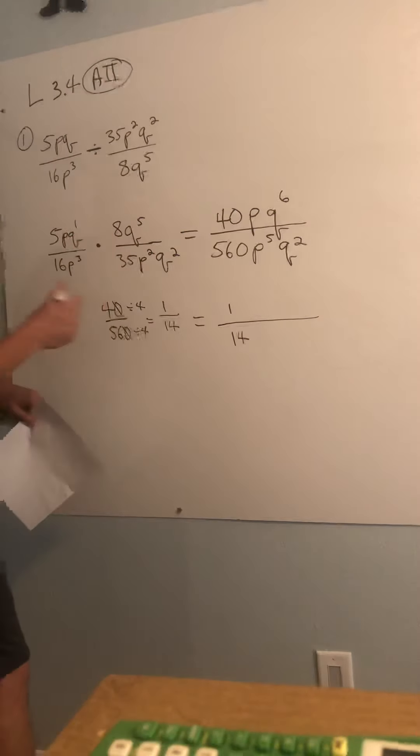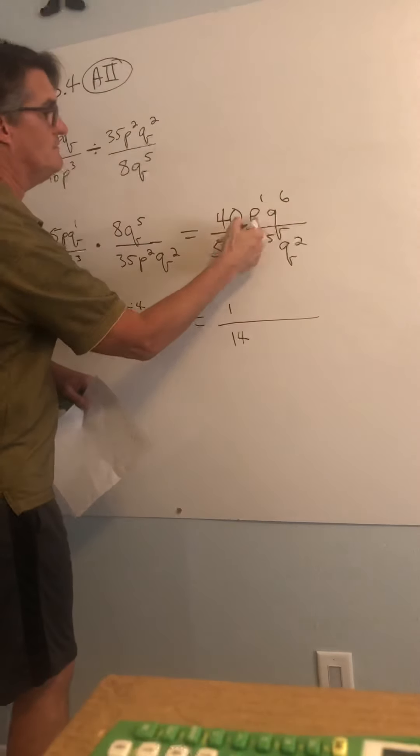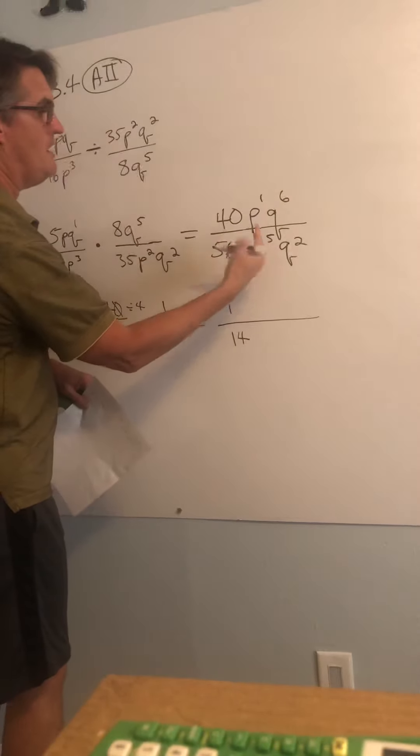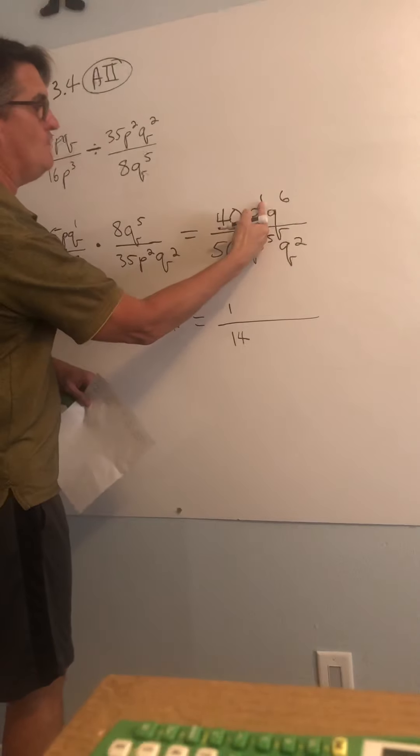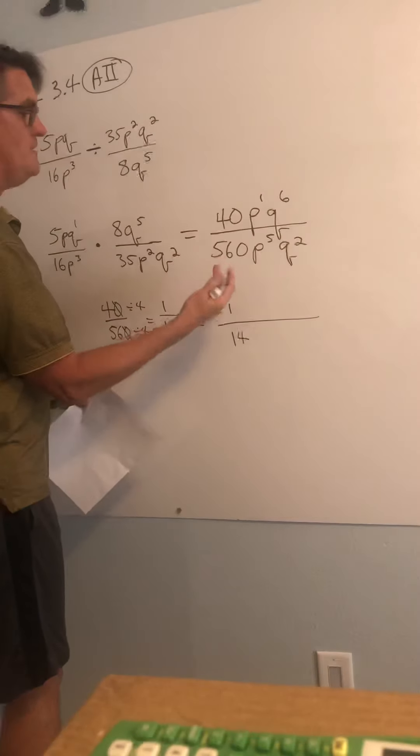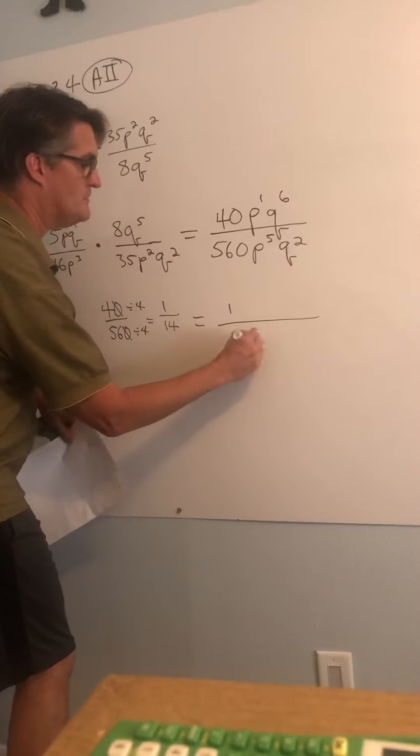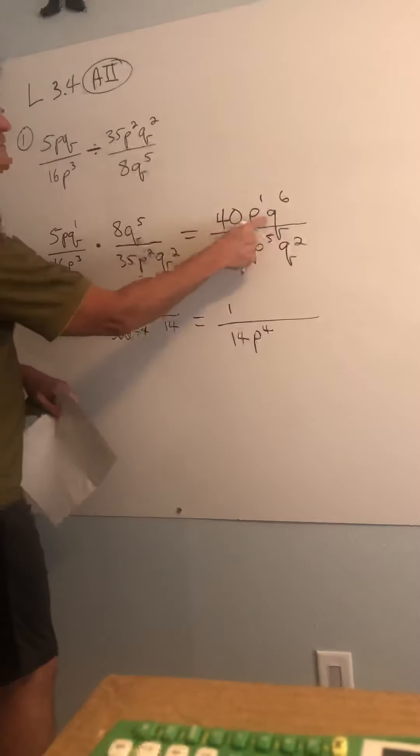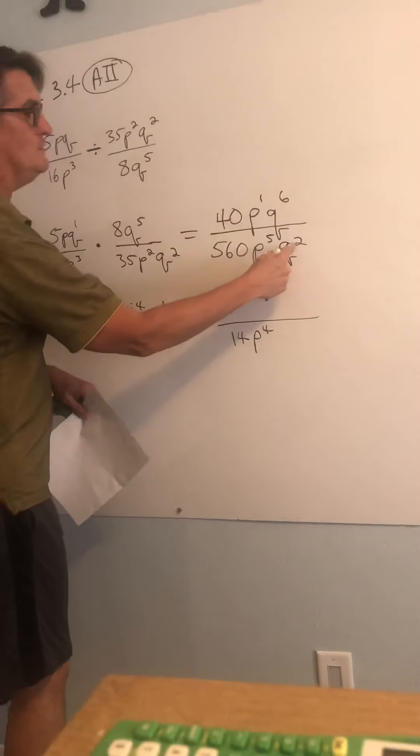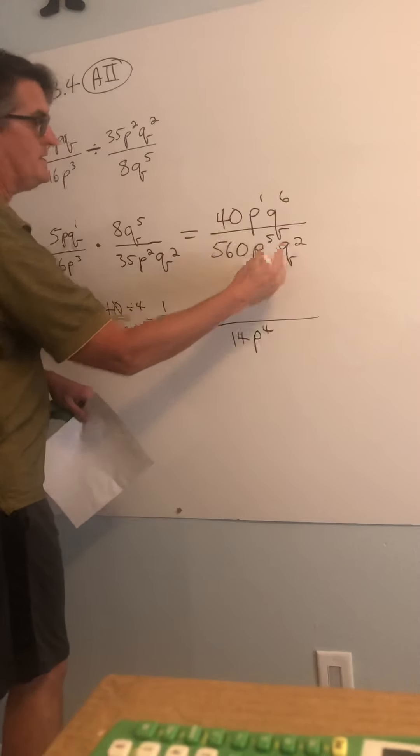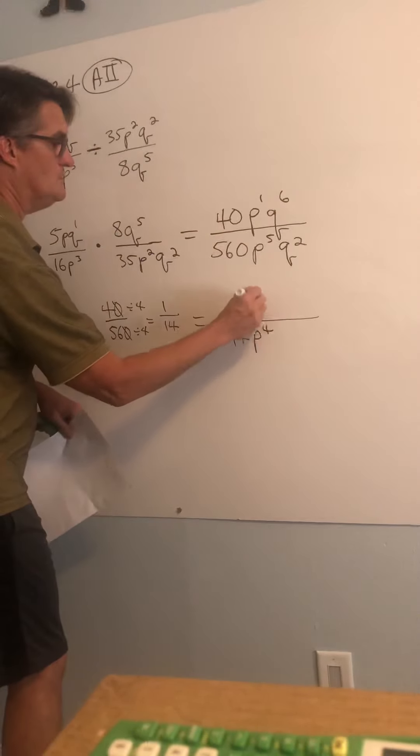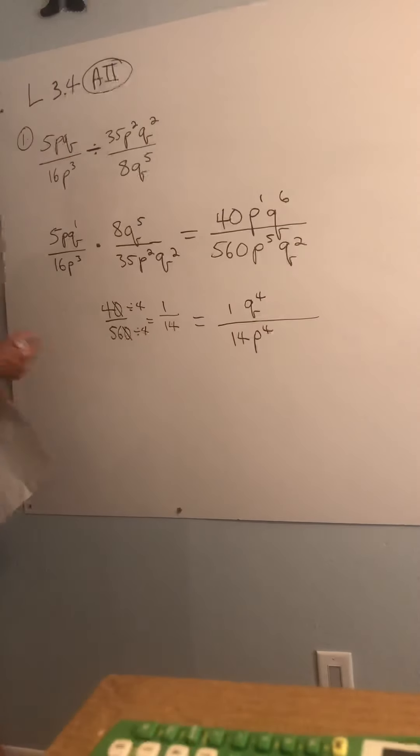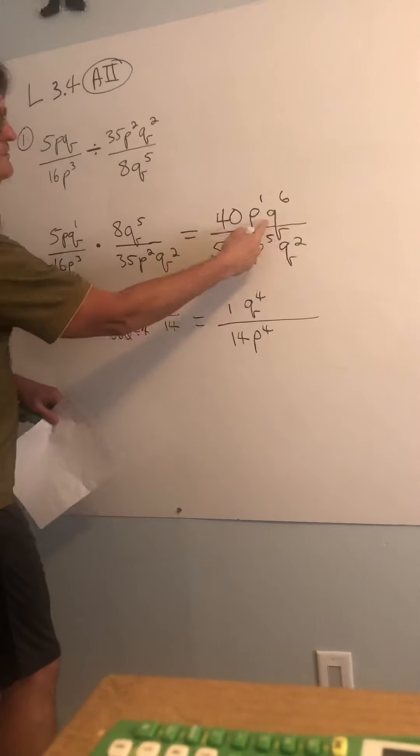Then let's go to the letters. The letters are so much easier, the variables. This is P to the first versus P to the fifth. I'm going to subtract 5, take away 1. It's P to the fourth, but there were more factors of P in the bottom. So I put P to the fourth in the bottom. Q to the sixth over Q to the second, subtract, and I'm going to get Q to the fourth power, and I'll keep the factors of Q in the top like that, because there's more factors of Q in the numerator.